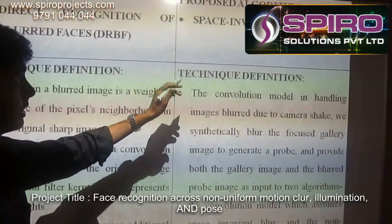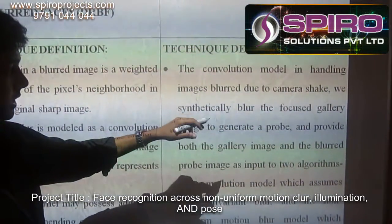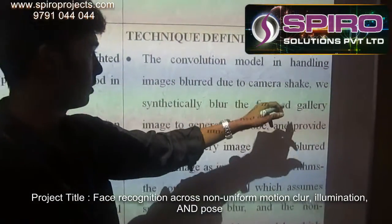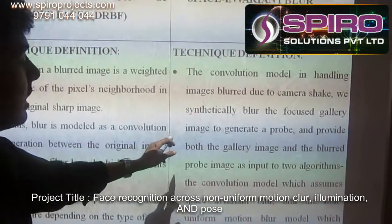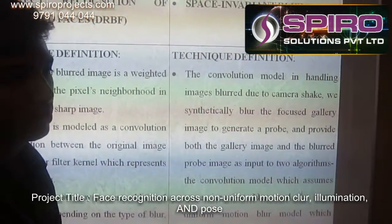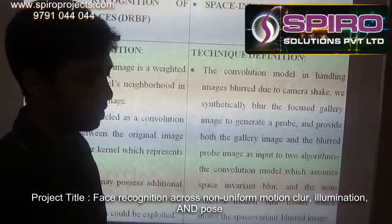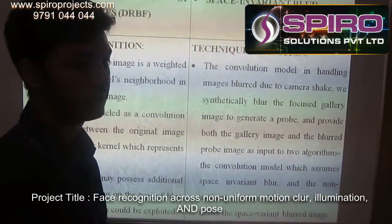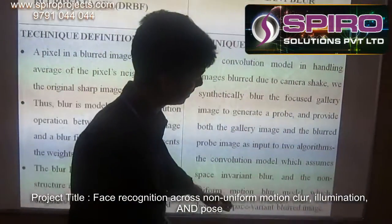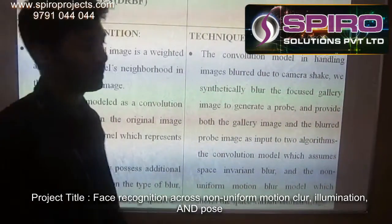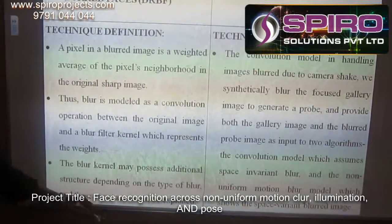In the proposed technique, we are handling image blur caused by camera shake. We synthetically blur and focus the gallery images. We already have a gallery containing all data regarding images that could possibly be blurred, and we make the image look like the original image, through which we get the authenticated image.